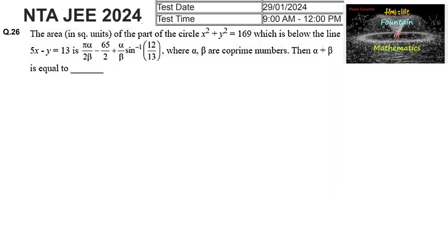The area in square units of the part of the circle x² + y² = 169 which is below the line 5x - y = 13 is given as πα/(2β) minus 65/2 plus α/β times sin inverse of 12/13.